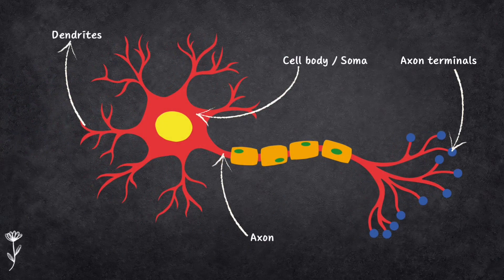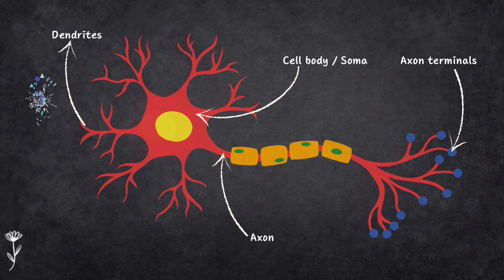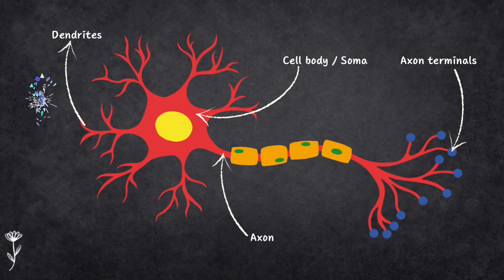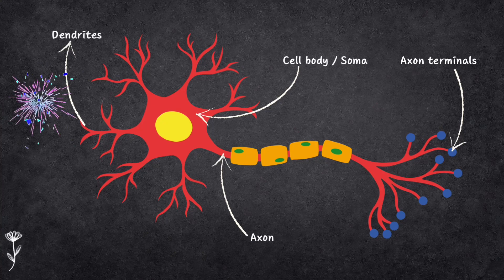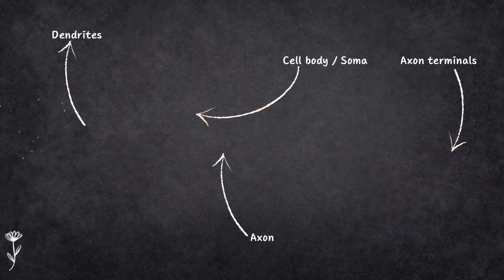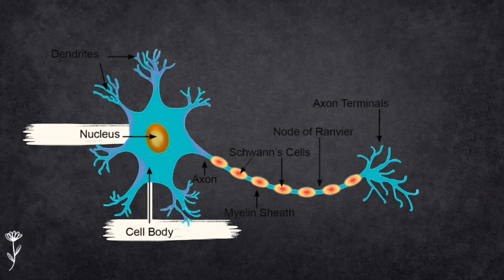When we talk about the nervous system and how it works, we have to give credit to super specialized cells called neurons — the information messengers of our body. Every neuron has three main parts: the cell body, dendrites and axons. The cell body, sometimes called the soma, is like the control center of the neuron — the brain of the cell. Right there in the center you'll find the nucleus and other important organelles like the Golgi body and mitochondria, the powerhouses and factories that keep the neuron running.